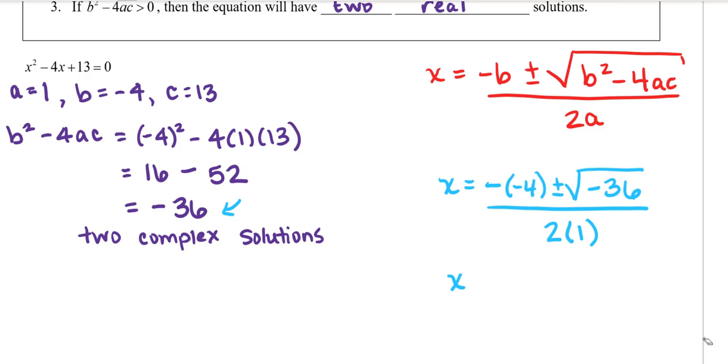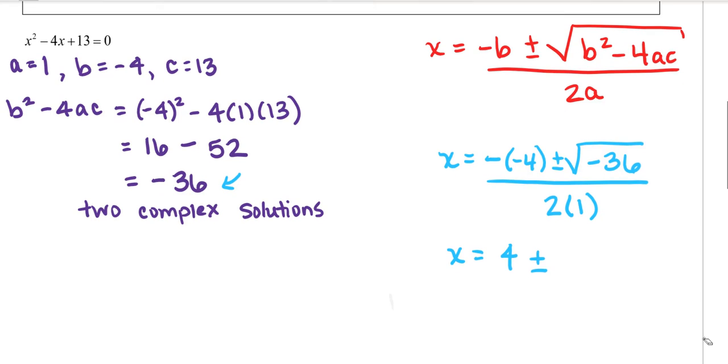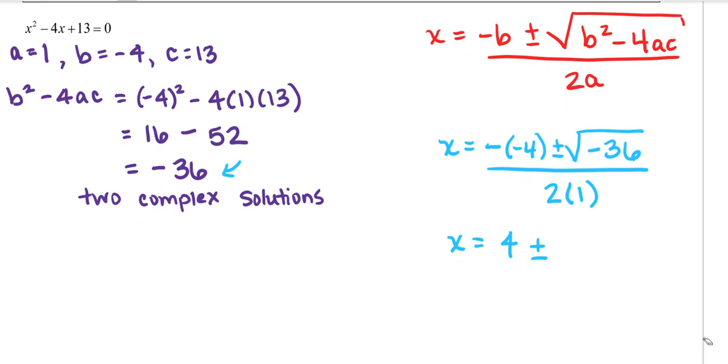So let's carry on. So negative negative 4, that's 4 plus or minus. Well the square root of negative 36, well that is a complex number. So square root of negative 36, that would be 6i. And then 2 times 1 is 2.